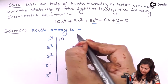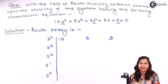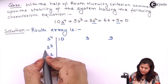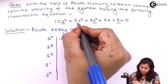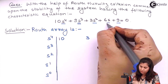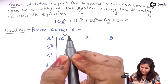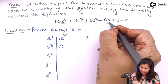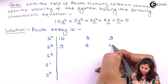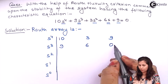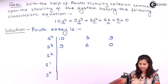For s⁴ we have 10, for s² we have 3, and for s⁰ we have 9. Next we have s³ — these are the odd terms — so we write the coefficients of s³ and s¹. The s³ coefficient is 9 and the s¹ coefficient is 6. Below the last entry we write 0 to complete the array.